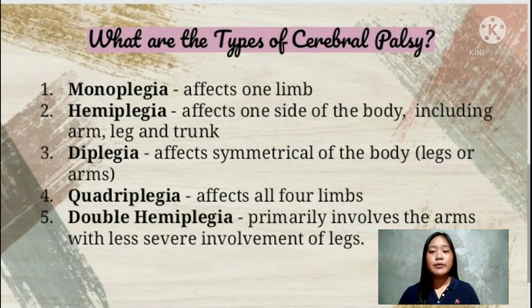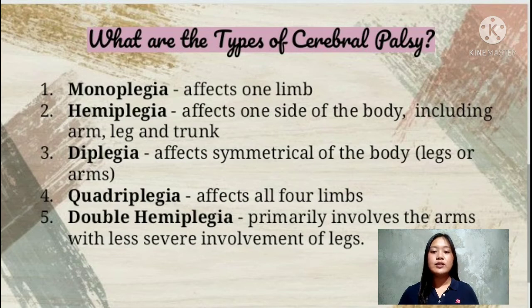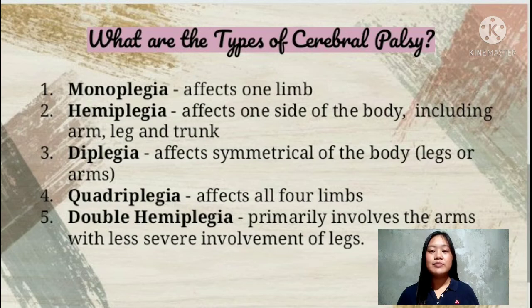There are different types of cerebral palsy. The first is monoplegia, which affects one limb. The second is hemiplegia, which affects one side of the body including the arm, leg, and trunk. The third is diplegia, which affects symmetrical parts of the body, the legs or arms. The fourth is quadriplegia, which affects all four limbs. Lastly, double hemiplegia primarily involves the arms with less severe involvement of the legs.